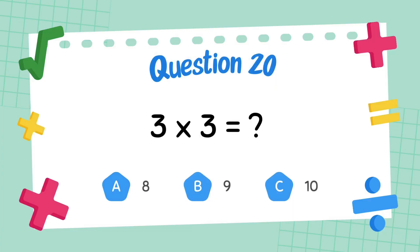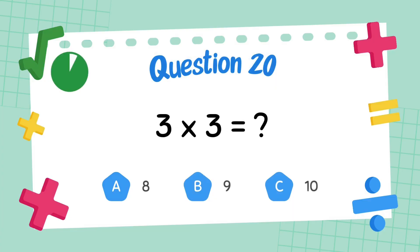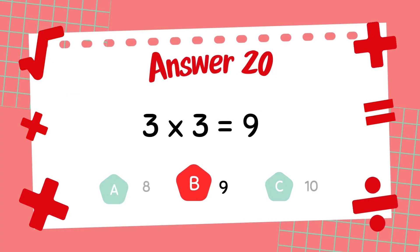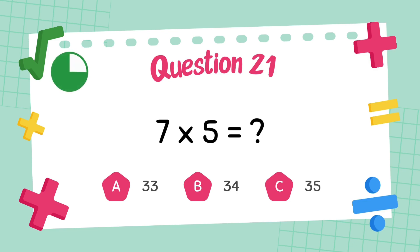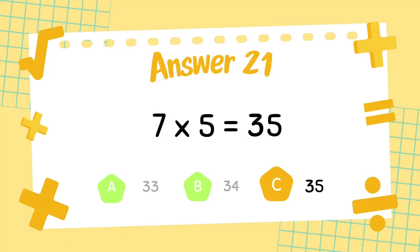What is 3 multiply 3? The answer is 9. What is 7 multiply 5? The answer is 35.